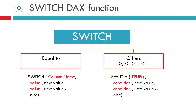Looking at the syntax for the first approach, you will simply be referring to a column in the first argument of SWITCH. Then in the second, fourth, sixth and so on positions, you specify the original values to be found — these can be text or numeric values. In the third, fifth, seventh and so on positions, you mention the corresponding values to be displayed. These original and new values are mentioned in pairs, and the last argument specifies what value to display if nothing is found.